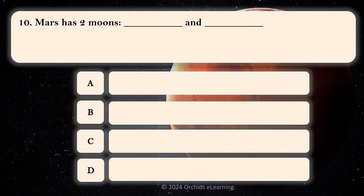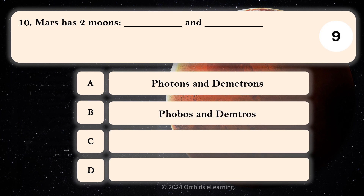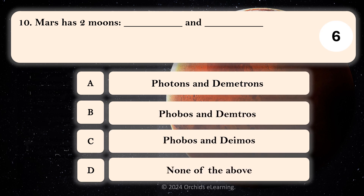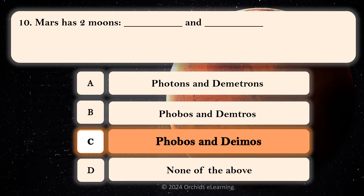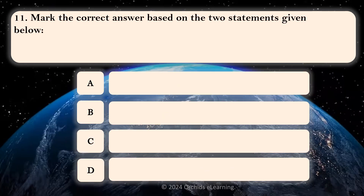Mars has two moons. B. X: Deimos. Mark the correct answer based on the two statements given below.